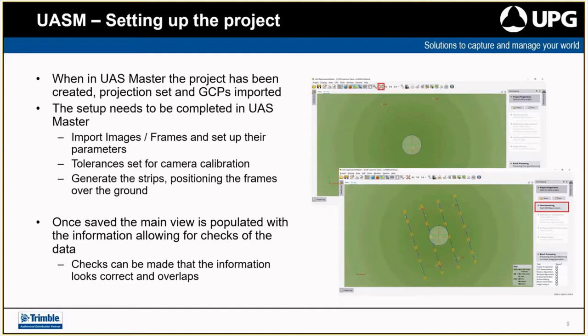Once you click Save on your imported data, the main view will populate. You can see yellow rectangles representing each of the photo locations, blue lines representing the flight paths, and green triangles representing the GCP locations. All the information we've currently got is in the view. The photos are yellow at the moment because we've only just imported them — these colors will change as we work through the process.